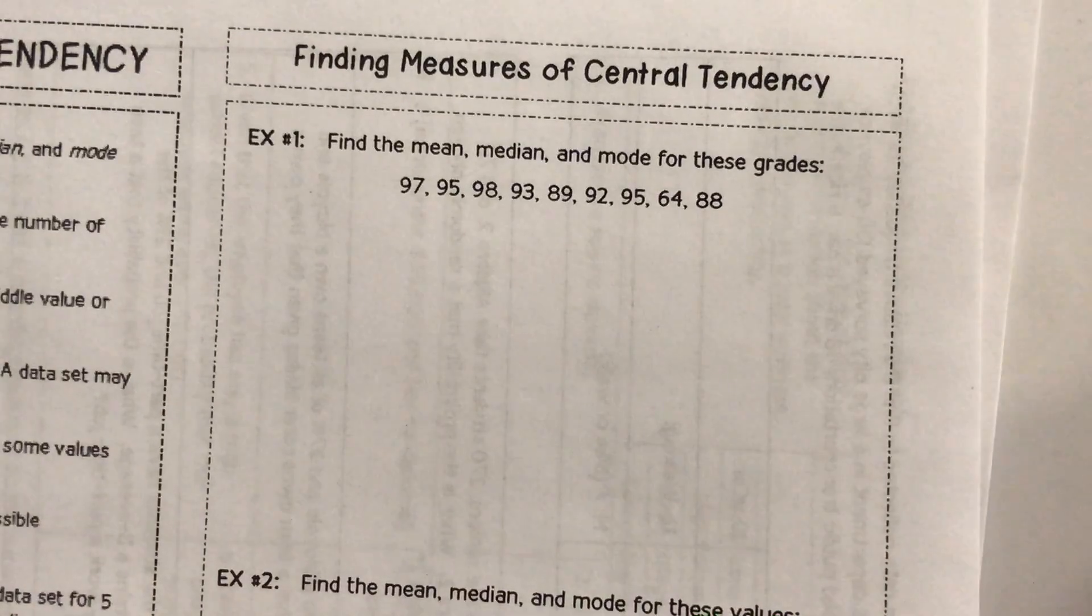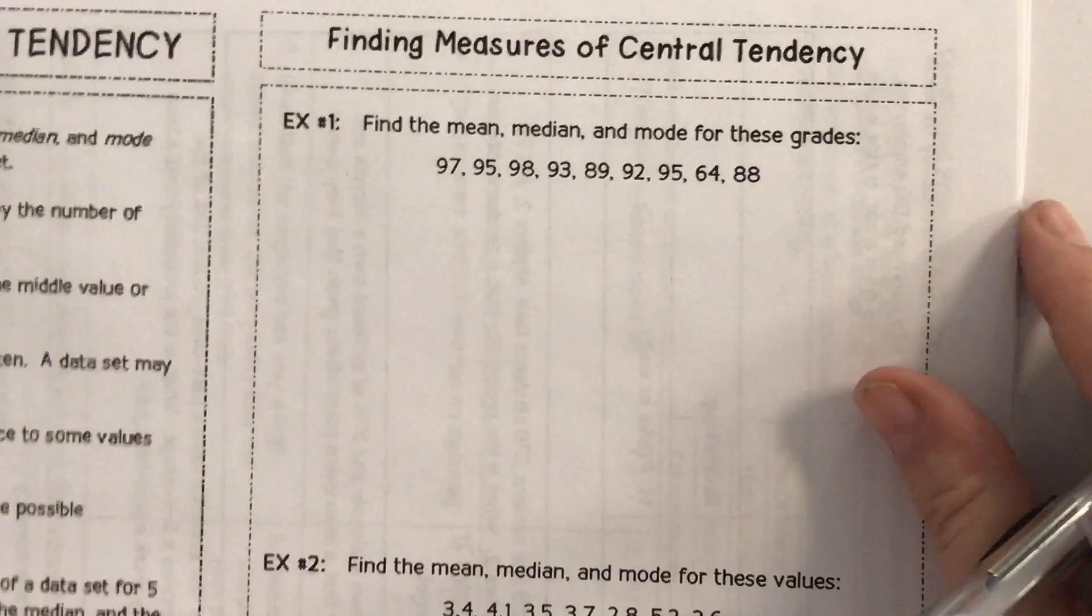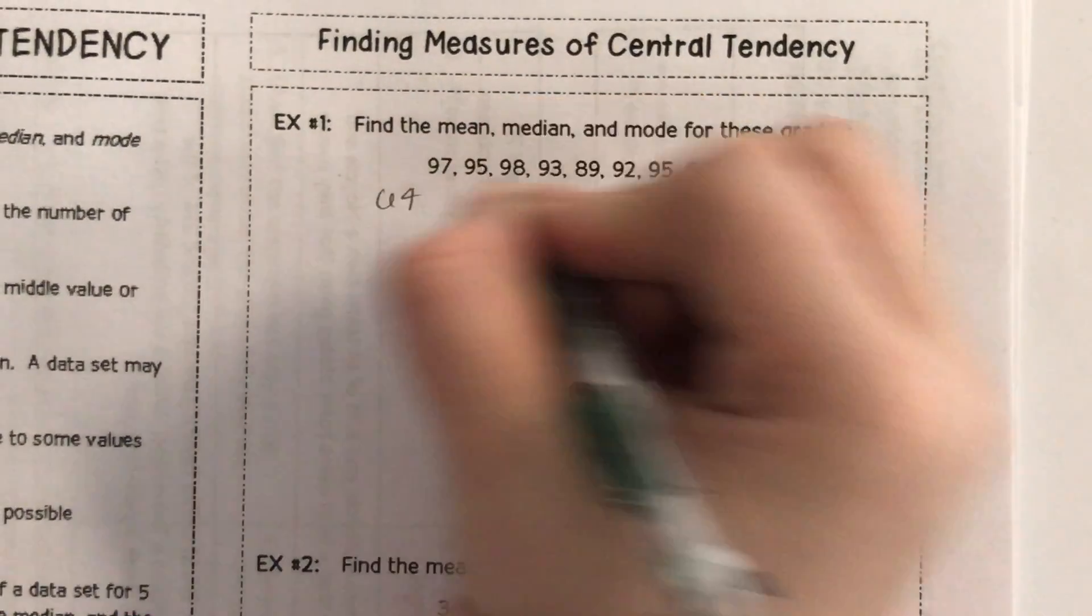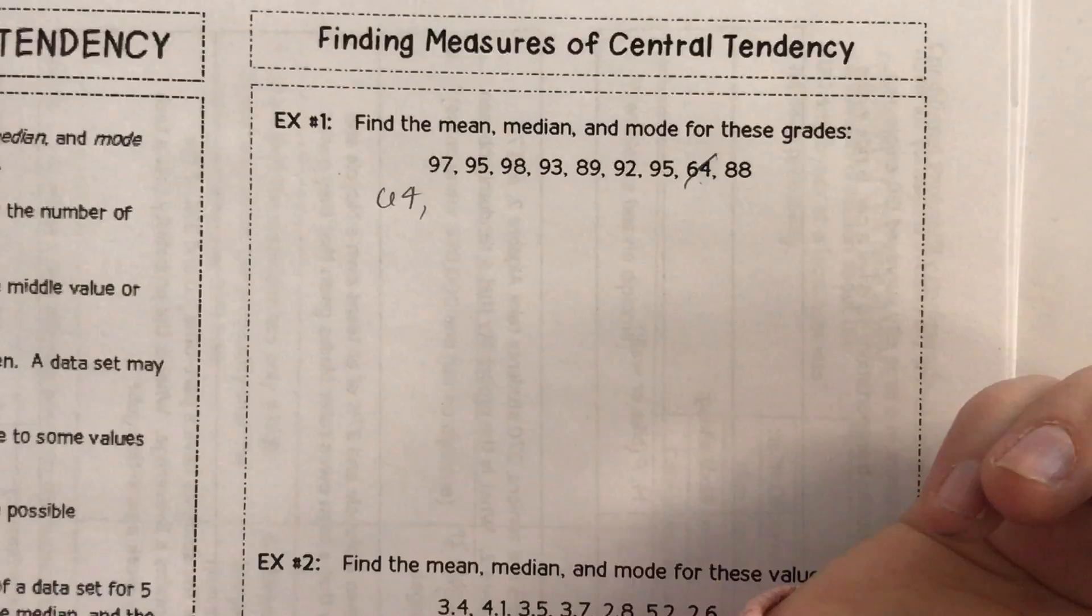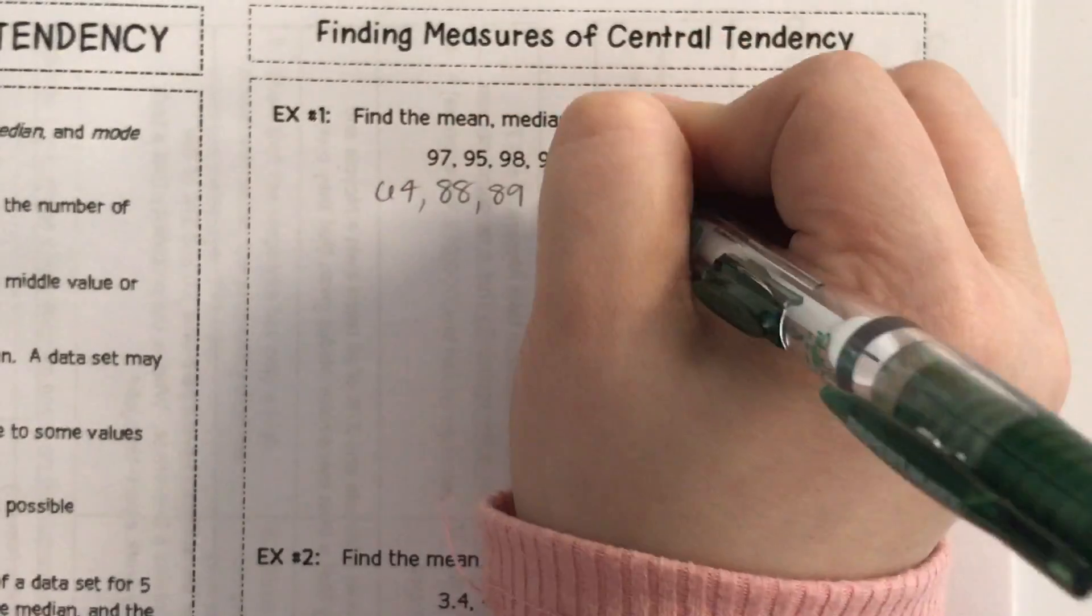So whenever I see a list of numbers, the first thing I want to do is put them in order. So we're going to put them in order, and what I like to do is I like to start with the bottom, so 64. Cross it off. The next highest one is 88. Cross it off. I'm crossing it off so I don't write it twice.